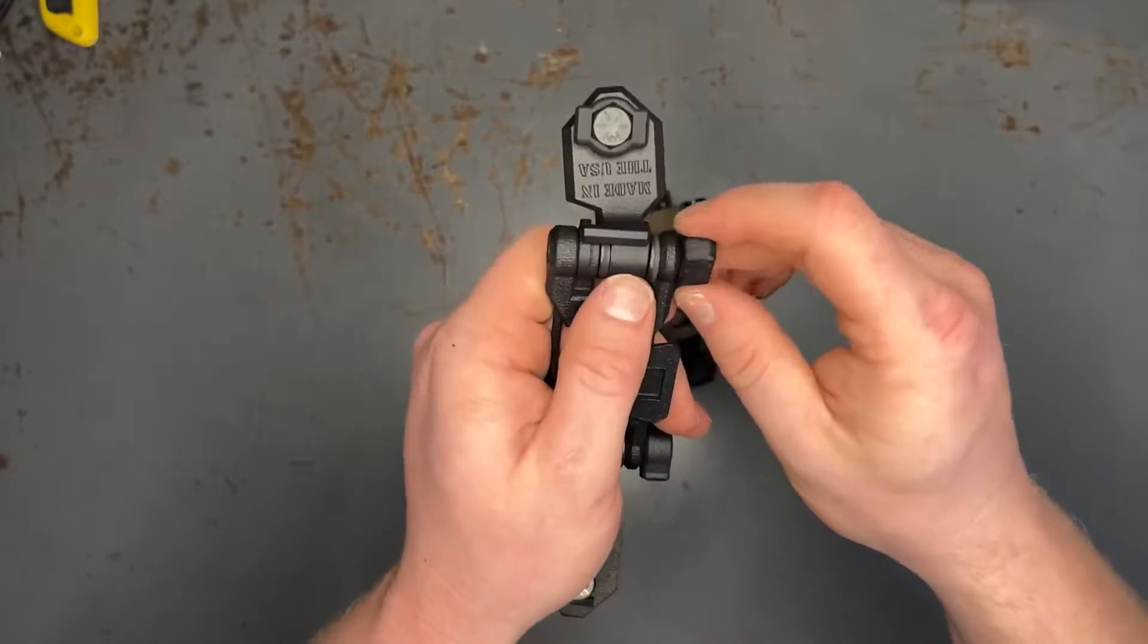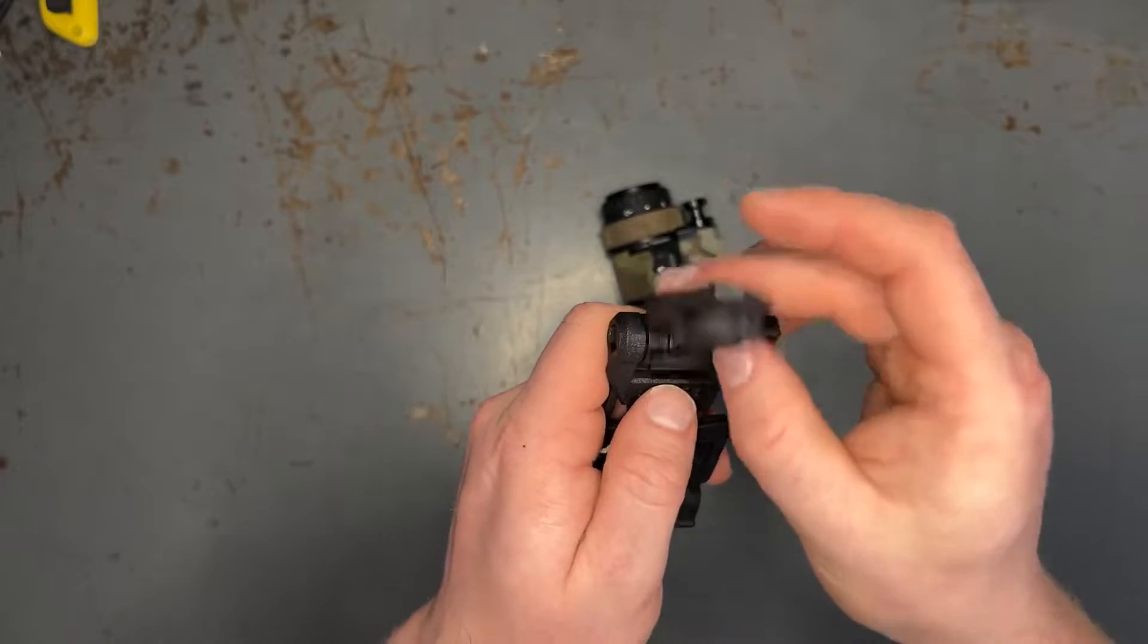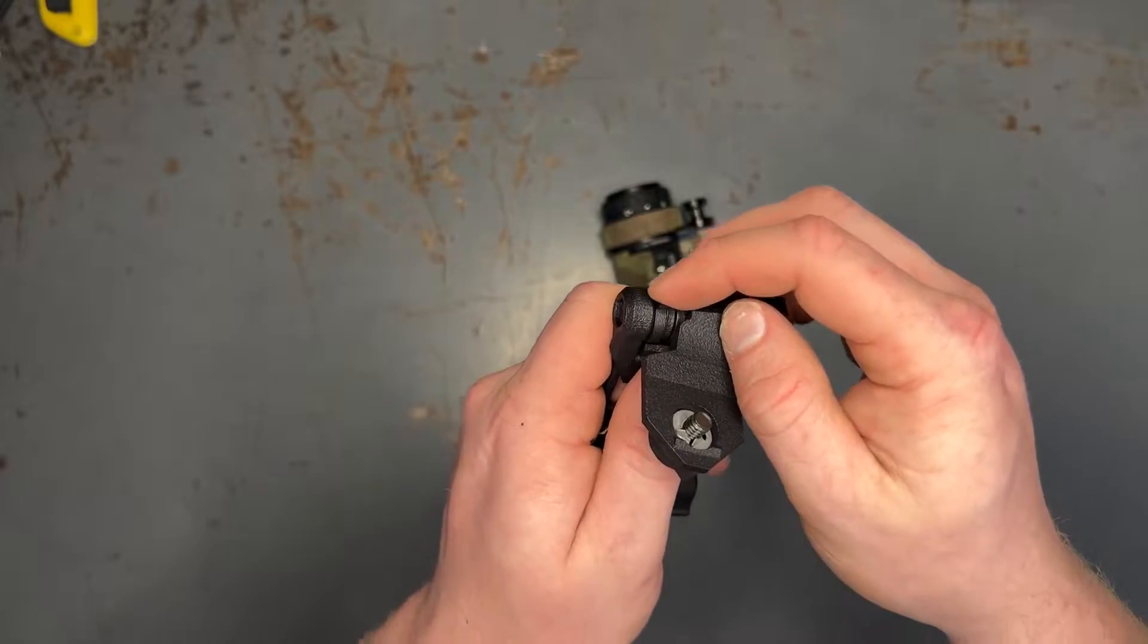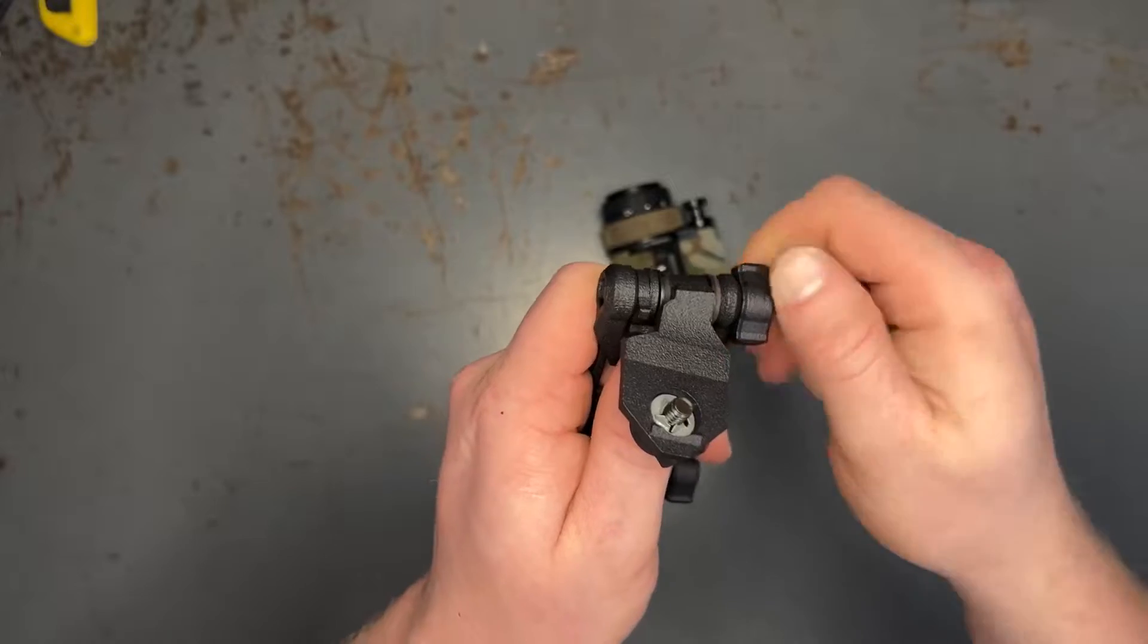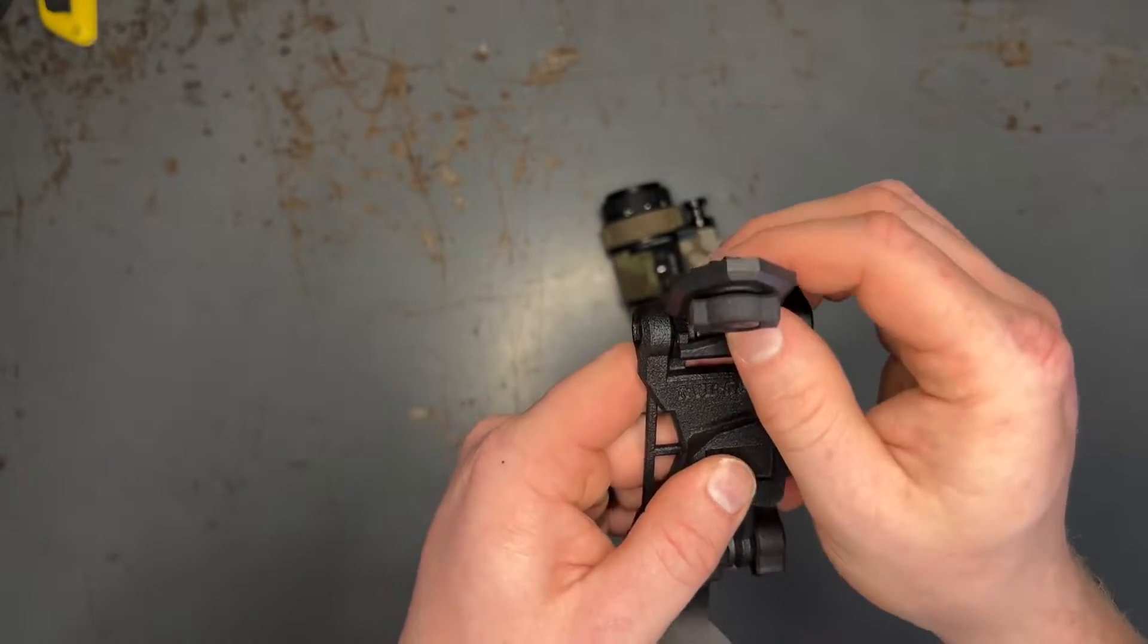The way to set this is to loosen the tensioning screw here at the front so that it's nice and loose and the arm free flows. Pull this IPD stop all the way up, put just a small amount of tension, enough that the night vision device when mounted won't fall out of the way.